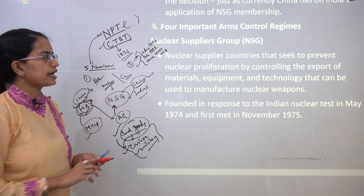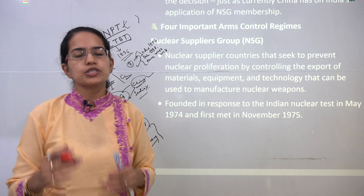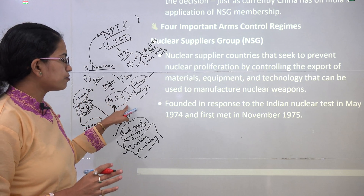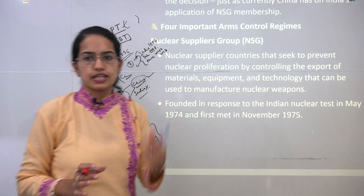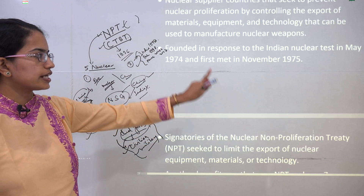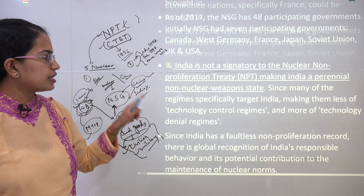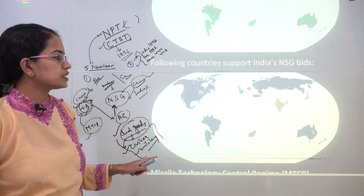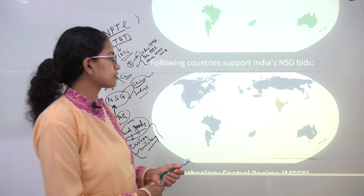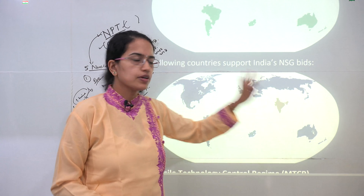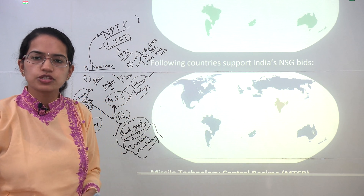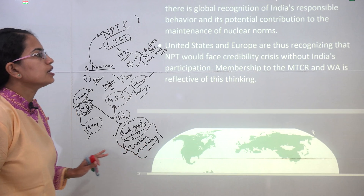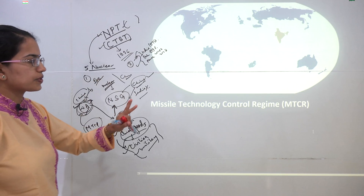The Nuclear Suppliers Group controls the export of nuclear supplies and weapons only to members within that group. It was founded in 1974 after India's first nuclear test, with the first meeting held in 1975. Nations supporting India's entry into the NSG include America and Australia, while China is restricting or holding down India's entry. Knowing which nations support and which oppose India is very important.